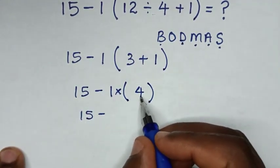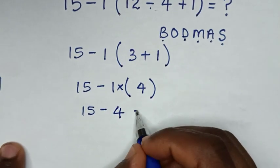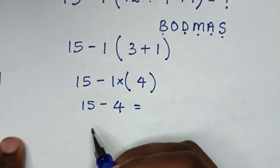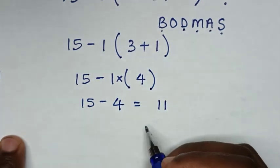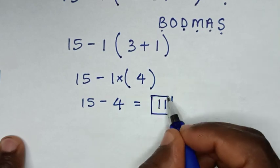1 times 4 is 4. Then for the subtraction: 15 minus 4 which is 11. Therefore, this is our final answer.